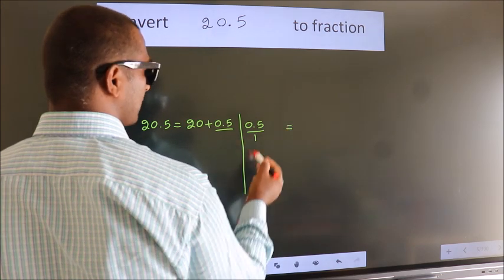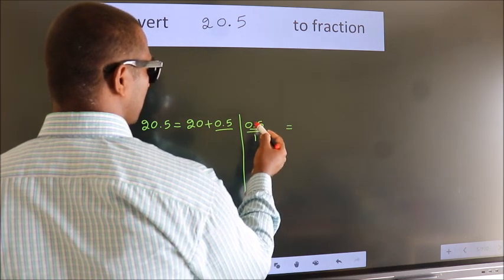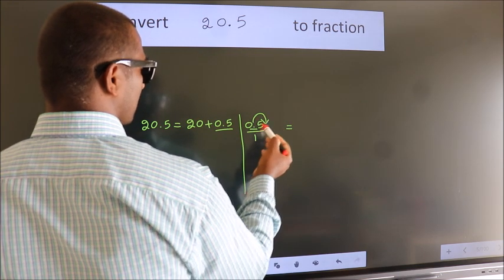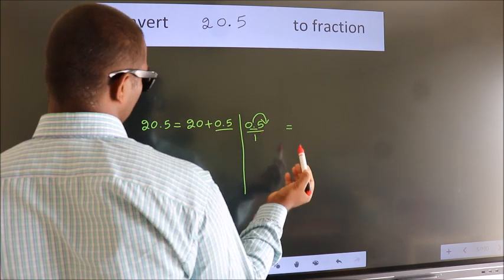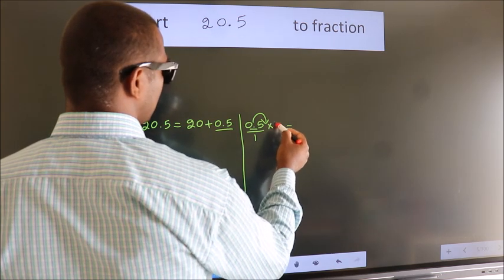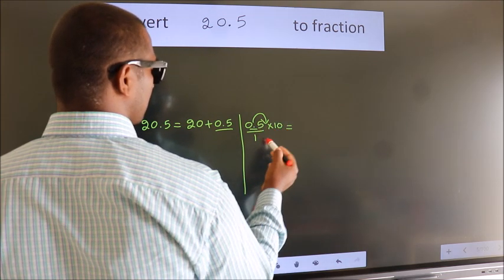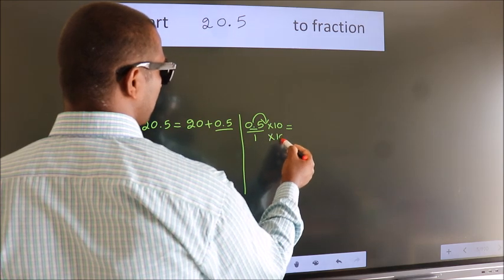we have to move this decimal after one number. To move this decimal after one number, multiply it with 10. Whatever you are multiplying in the numerator, do the same in the denominator.